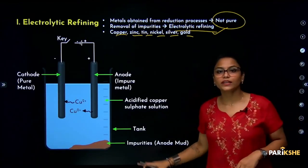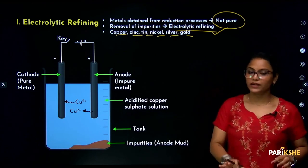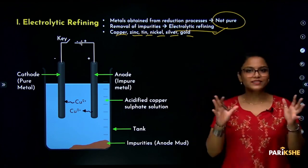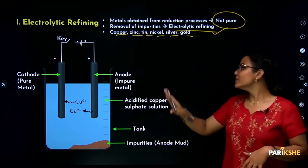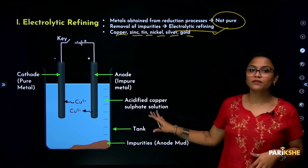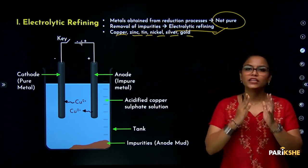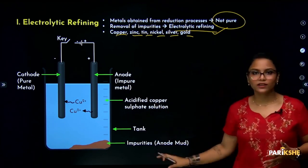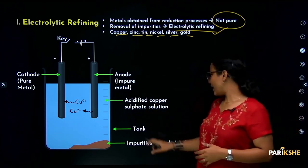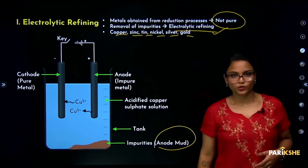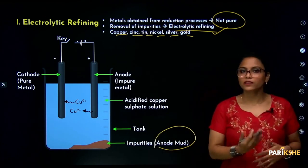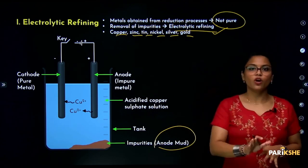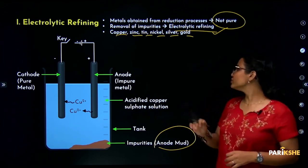This is the electrolytic refining setup. This setup or experiment is a large-scale process. This diagram is important for exams — you need to know the diagram and label the parts, including the anode label. This is a diagram-based question.